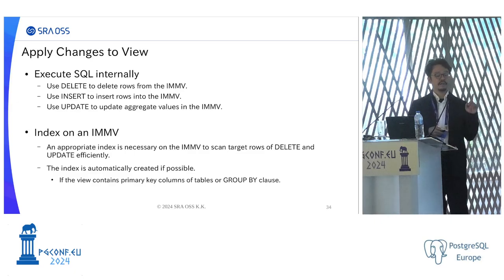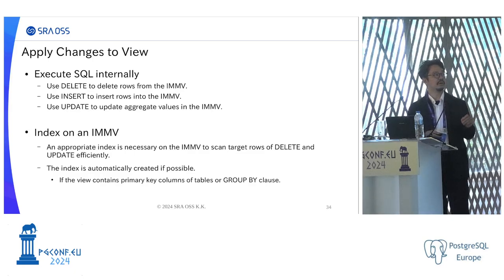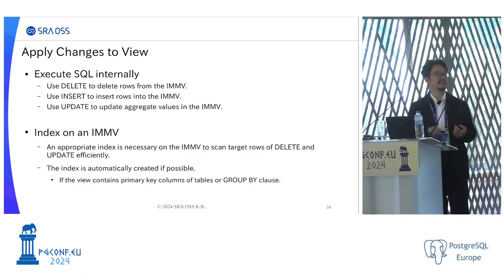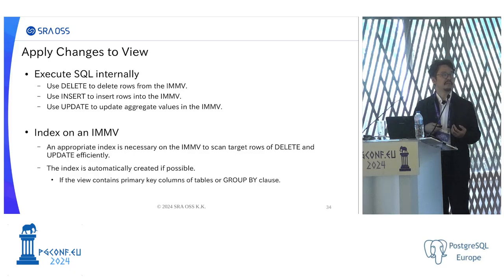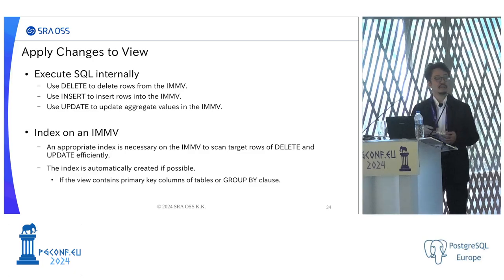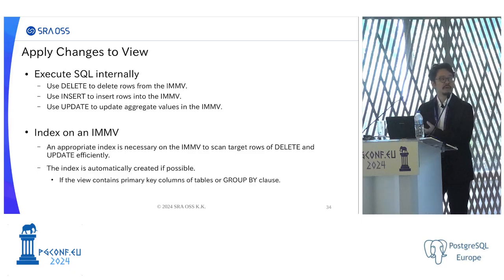Changes are applied to the view by executing DELETE or INSERT commands for deleting or inserting rows, and UPDATE is used to maintain views with aggregate functions. For efficient maintenance, an appropriate index is necessary on the view to efficiently look up updated or deleted rows. The index is automatically created at view definition time if possible. 'If possible' means: if the view contains primary key columns of the base table, the index is created on those columns; or if the view has a GROUP BY clause, the index is created on the group key columns.